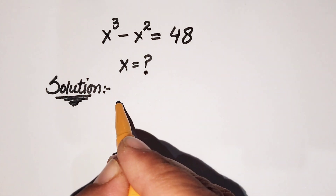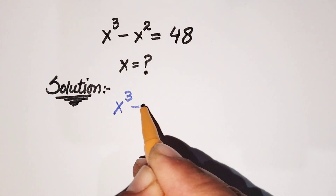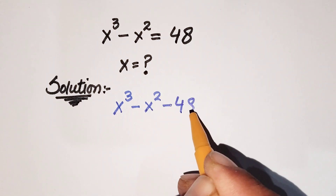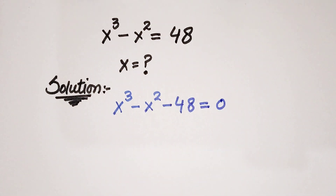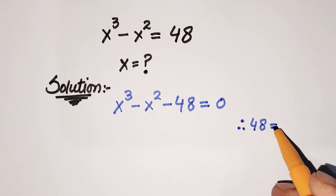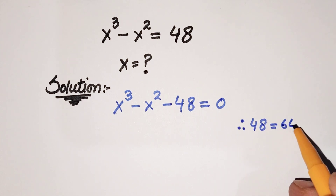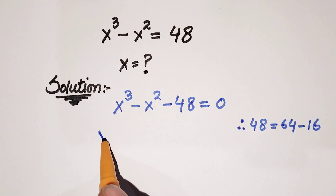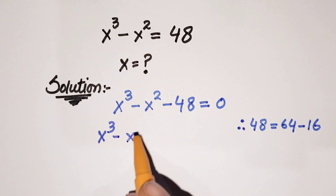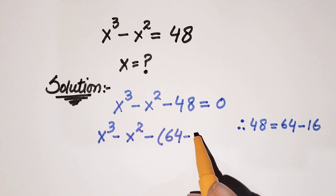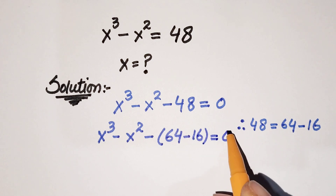Our first step is to rearrange: x cubed minus x squared minus 48 is equal to 0. Now we are going to factorize 48. We know that if we write 48 as 64 minus 16, then x cubed minus x squared minus 48 equals 64 minus 16, which is equal to 0.